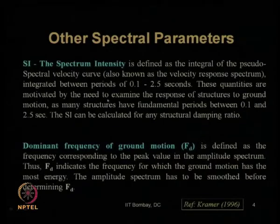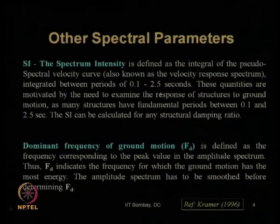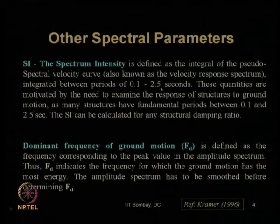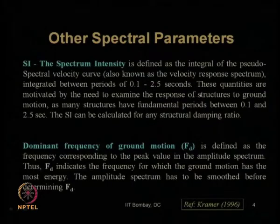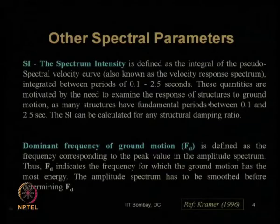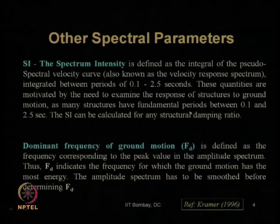The velocity response spectrum has to be integrated between periods of 0.1 seconds to 2.5 seconds. We also saw the reason why this period range was chosen — because most damaging earthquakes fall within this frequency range. These quantities are motivated by the need to examine the response of structures to ground motion, as many structures have fundamental periods between 0.1 to 2.5 seconds.